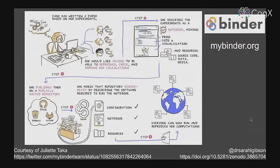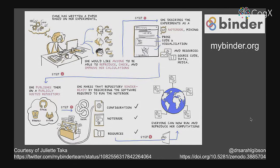This is what Binder looks like from a researcher's perspective. We have Jane here — she's written a paper based on her experiments and wants anyone to be able to reproduce, check, and verify her calculations. So she describes her experiments in a Jupyter notebook, a form of literate programming where you can mix code, prose, and visualizations together. She also includes other resources like source code, data, or media, bundles everything together, and publishes it on a publicly hosted repository such as GitHub, Bitbucket, or GitLab.